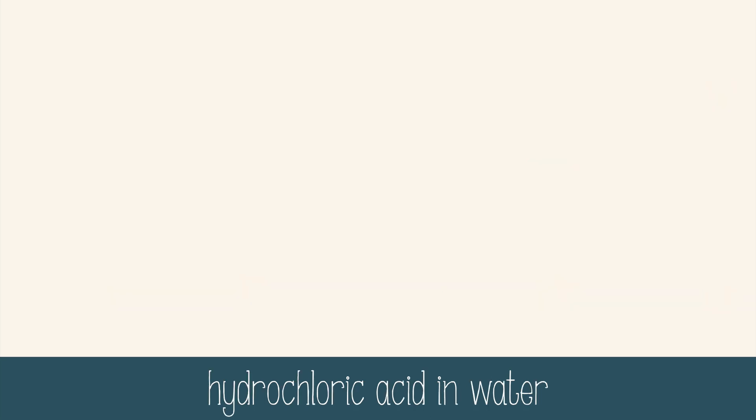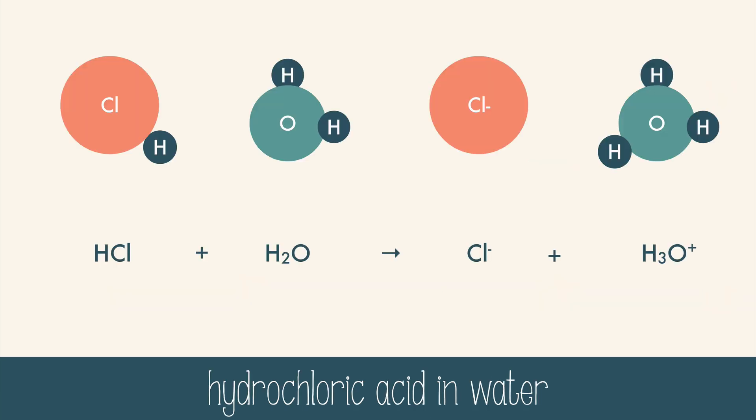Let's look again at hydrochloric acid in water. Hydrochloric acid is an Arrhenius acid because it creates a hydrogen ion. The hydrogen ion immediately attaches itself to water to form hydronium, H3O+, which is the aqueous form of hydrogen ion.